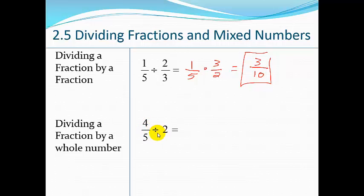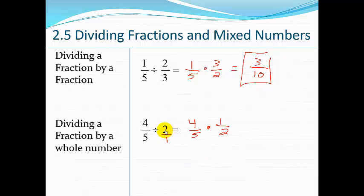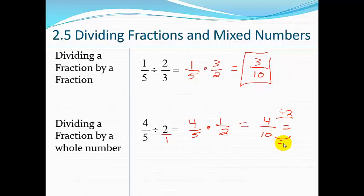Now let's practice dividing a fraction by a whole number. Remember, I want the whole number to look like a fraction, so put it over 1. If it's a mixed number, change it to an improper fraction first. So 4-fifths divided by 2: keep 4-fifths, multiply by the reciprocal of 2, which is one-half. That gives 4 times 1 over 5 times 2, which is 4 over 10. Simplify by dividing by 2: that gives 2 over 5, or 2-fifths.